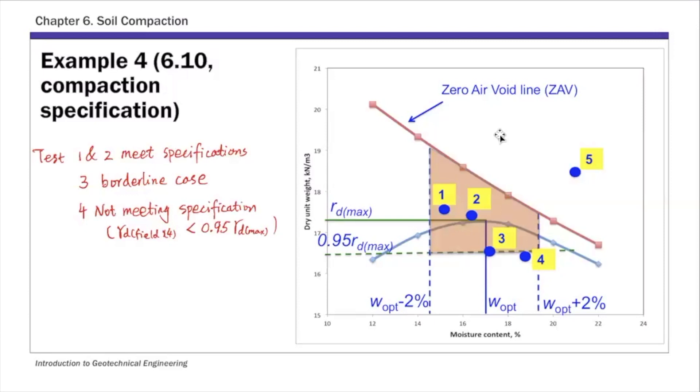And then number five, this is a special point. So number five actually plots above the zero air void line. So this is most likely an error. And plus, of course, its moisture content is outside that optimum plus minus 2%. So this is the example for compaction. And that's the last example I want to go over in class.